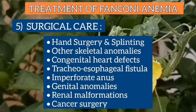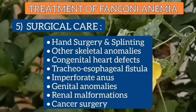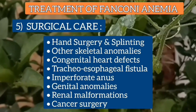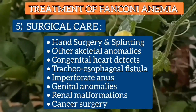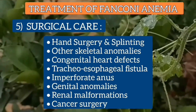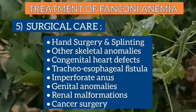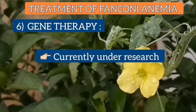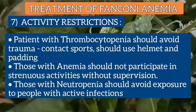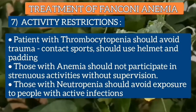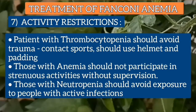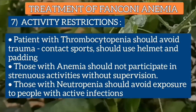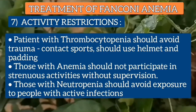Surgical care includes hand surgery and splinting for thumb and radial anomalies, and surgery for correction of skeletal anomalies, congenital heart defects, tracheoesophageal fistula, imperforate anus, genital anomalies and renal malformations. Cancer surgery should be performed by experienced surgeons in consultation with hematologists and oncologists. Gene therapy for Fanconi Anemia is currently under research. Patients with thrombocytopenia should avoid trauma from contact sports and should use helmets and padding. Those with anemia should participate in strenuous activity only under supervision and as tolerated. Those with severe neutropenia need to avoid exposure to people with active infections.